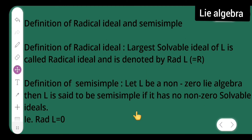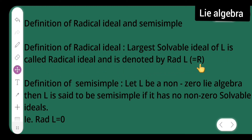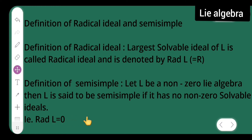Definition of radical ideal: the largest solvable ideal of l is called the radical ideal and is denoted by rad(l) = r. Definition of semi-simple: let l be a non-zero Lie algebra, then l is said to be semi-simple if it has no non-zero solvable ideal, that is rad(l) = 0.